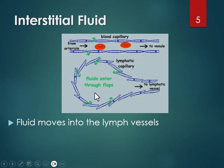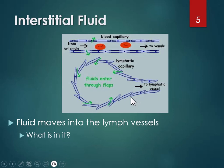Like a siphon, because it's dumping into the blood at the subclavian veins, the fluid just moves. Fluid moves through the lymph vessels passively — there is no pump. If you analyzed it, it would look just like plasma except it doesn't have red blood cells or large plasma proteins in it. It moves very passively, kind of like a siphon.